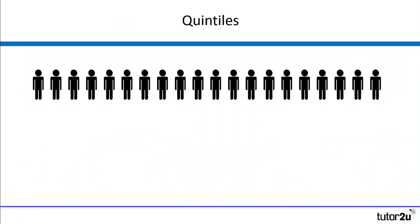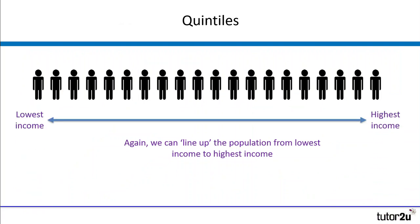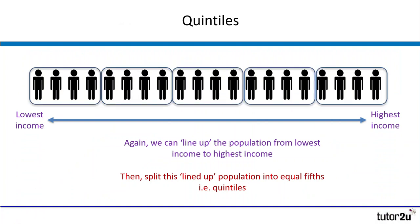The process is absolutely identical if we're looking at quintiles. Again we have our same population lined up from lowest to highest and this time we're splitting our population into equal fifths. Each of those fifths is a quintile. Again our first quintile is our 20% of the population with the lowest income. Our second quintile is the group between the 20th and 40th percentiles and so on all the way up to our fifth quintile which is the 20% of the population with the highest level of income.